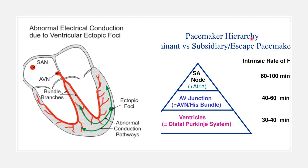The SA node is the pacemaker because its rhythm is the fastest, at 70 to 80 beats per minute. After that, the AV node has a rate of 50 to 60 beats per minute. For the Purkinje fibers, it is around 30 to 40 beats per minute.